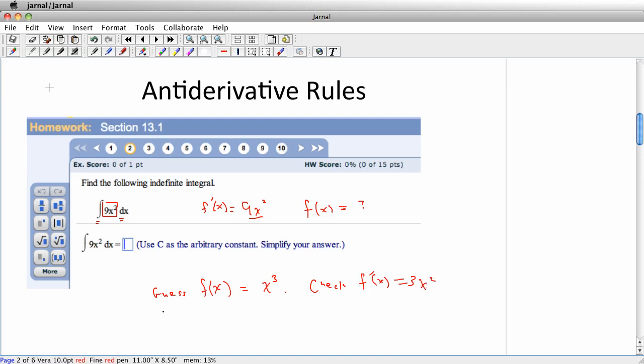So it's easy enough to fix this by revising my guess and saying, well, I wanted to get 9x squared, and I got 3x squared. So in other words, 3 times what I got is what I wanted. So if I start my guess off at 3 times what I guessed before, then when I check, I can see that the derivative of 3x cubed is 3 times 3x squared, and that's 9x squared, which is correct. So f of x equals 3x cubed would be a perfectly good answer.